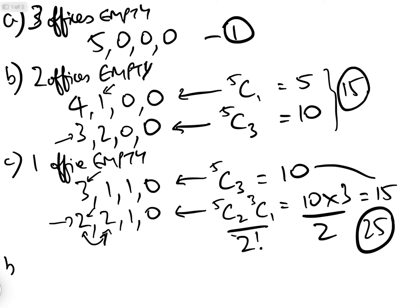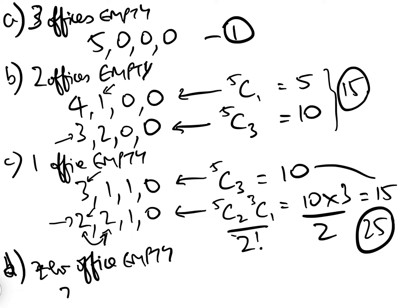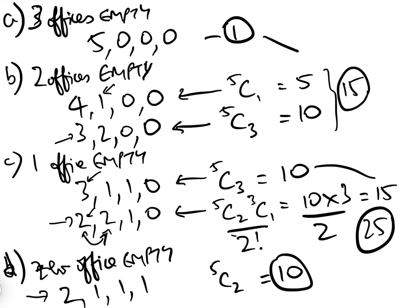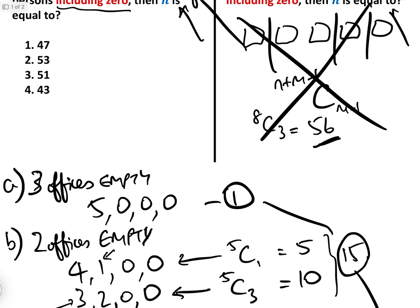Case D: zero offices empty. We can only have two, one, one, one — and the number of ways to do that is 5C2 ways of picking those two, which equals 10. That's the only arrangement with zero offices empty. So when we add everything up: 1 plus 15 plus 25 plus 10 gives us 51. So the answer is 51, which is answer number three.